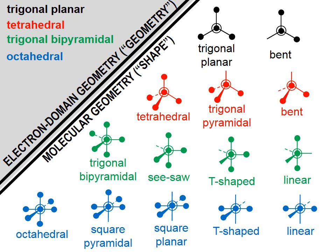As you can see here, in black letters at the upper left corner, I've got trigonal planar electron domain geometry. If there are atoms hanging off of each of those three domains, the molecular geometry is also trigonal planar. But if there are only two atoms hanging off, then that is a bent molecular geometry. And if there were only one atom hanging off and two unshared pairs, then that would be linear.